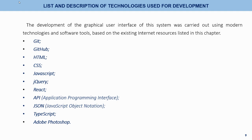List and description of technologies used for development. The development of the graphical user interface of the system was carried out using modern technologies and software tools, including: Git, GitHub, HTML, CSS, JavaScript, jQuery, React, API (application programming interface), JSON (JavaScript object notation), TypeScript, and Adobe Photoshop.